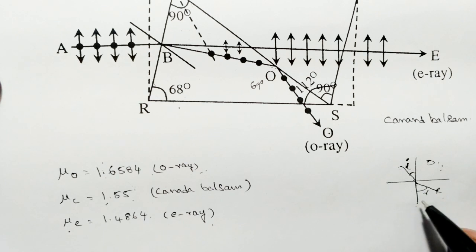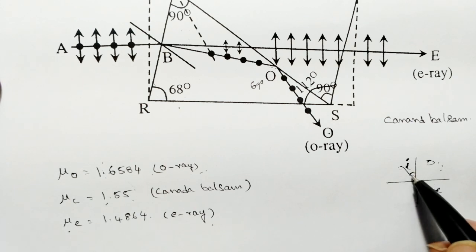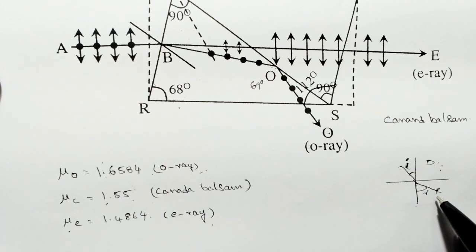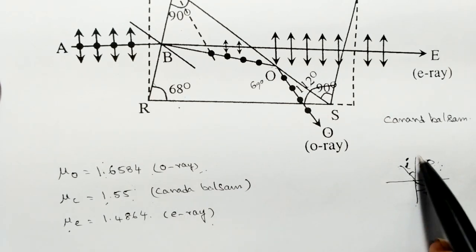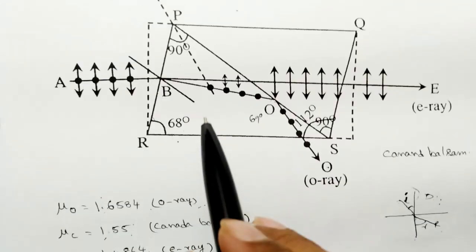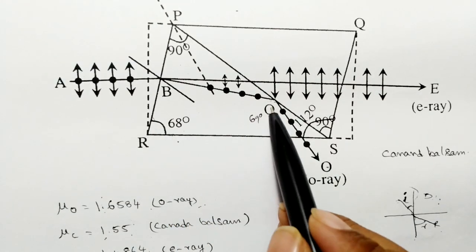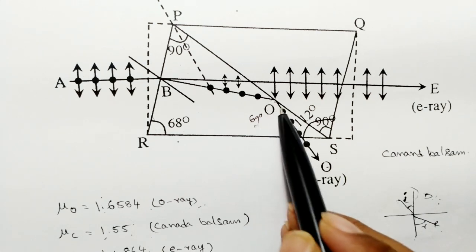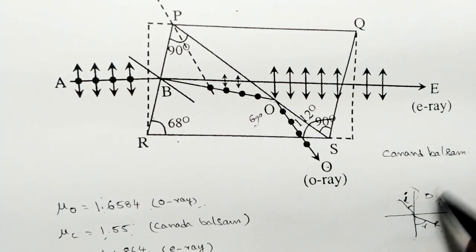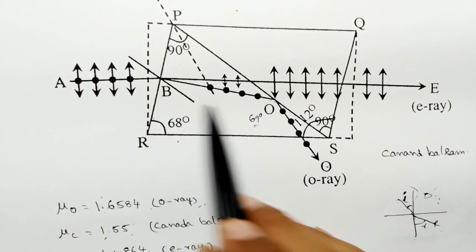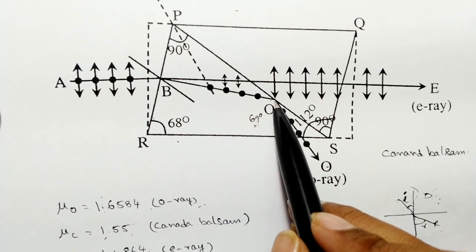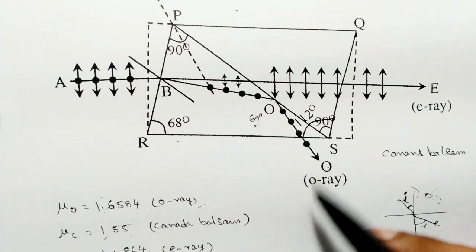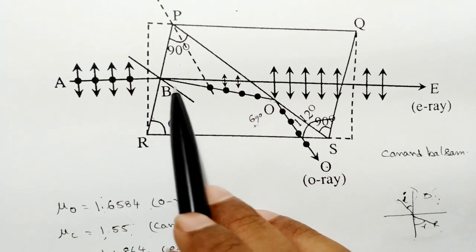The critical angle for this denser-rarer medium pair is around 57 degrees. Since the ordinary ray is incident at 69 degrees, which is greater than the critical angle, it undergoes total internal reflection and is diverted away, absorbed by the blackened sides of the prism.